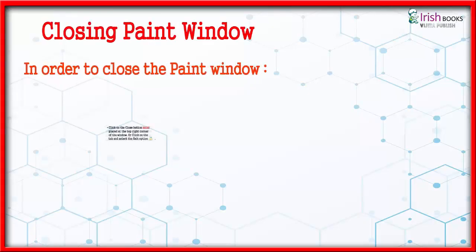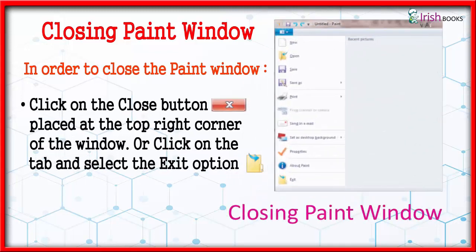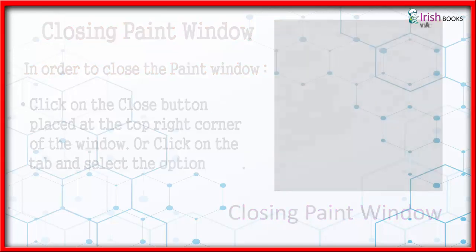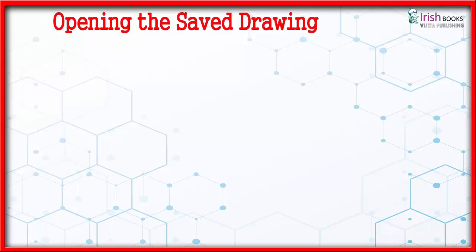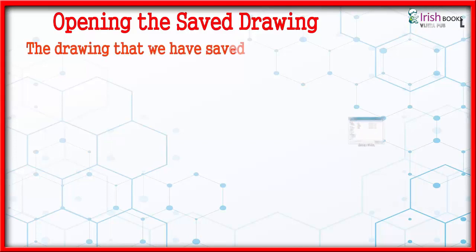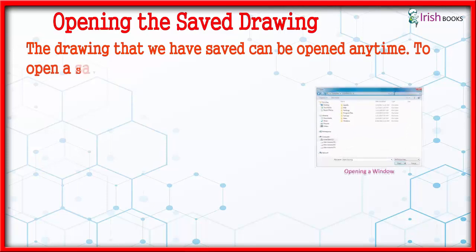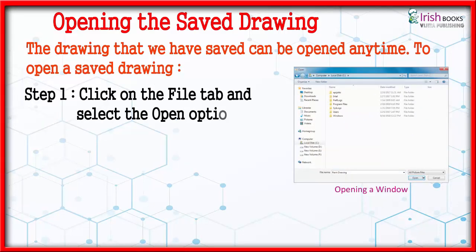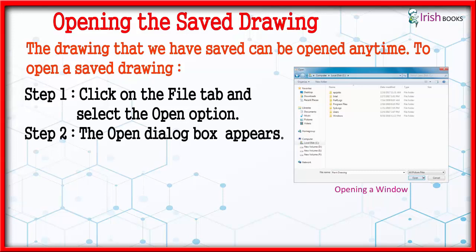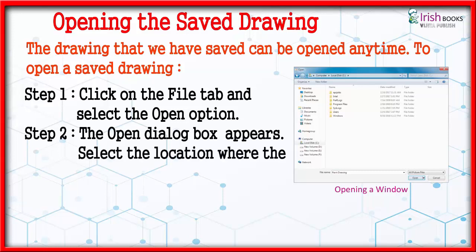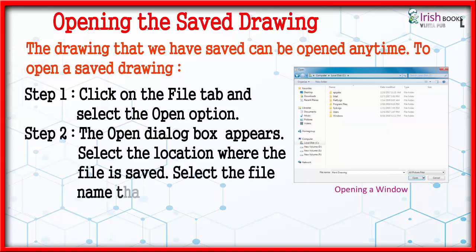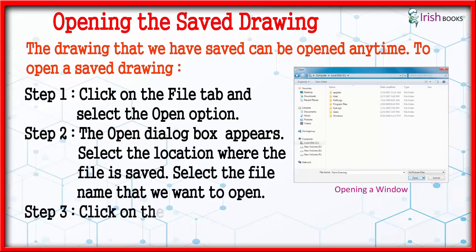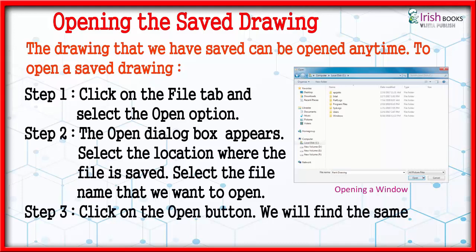Closing the Paint Window. To close the Paint window, click on the Close button at the top right corner of the window, or click on the File tab and select the Exit option. Opening a Saved Drawing. To open a saved drawing — Step 1: Click on the File tab and select the Open option. Step 2: The Open dialog box appears; select the location where the file is saved and select the file name. Step 3: Click the Open button and you will find the same drawing.